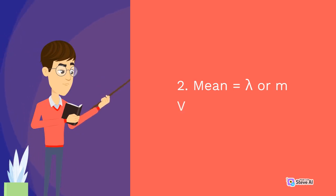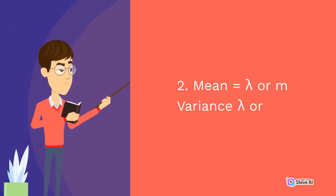2. Mean equals lambda or μ. Variance equals lambda or μ.